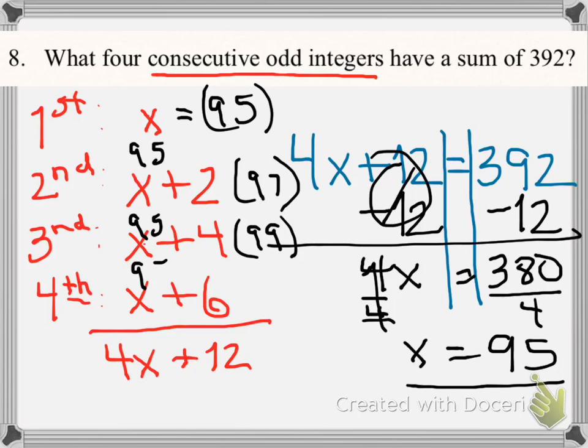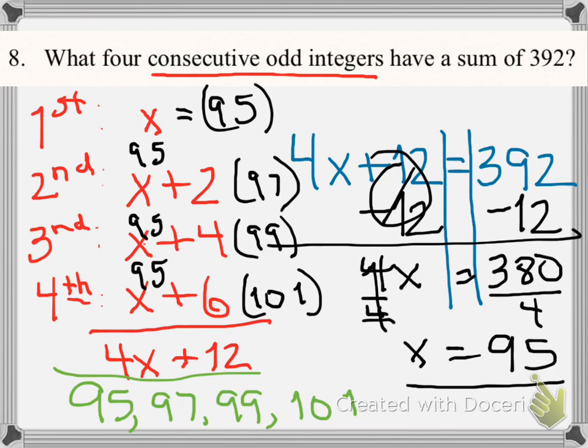The fourth integer is 95 plus 6, which is 101. So my integers for this problem are 95, 97, 99, and 101.